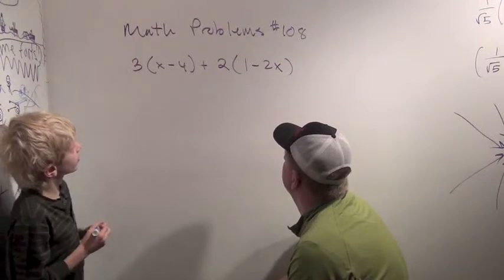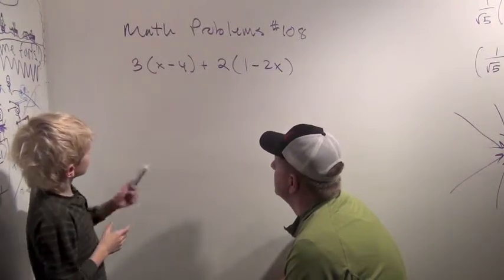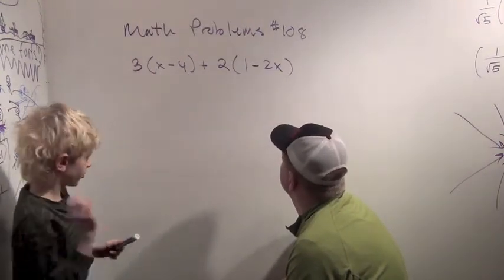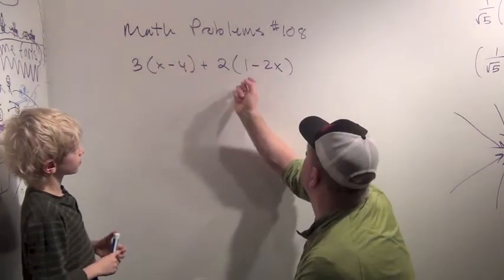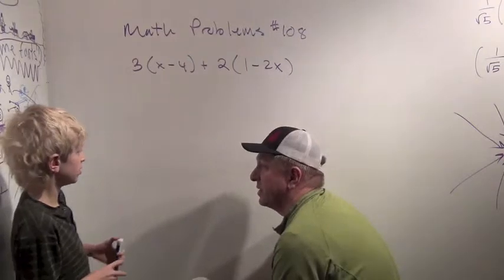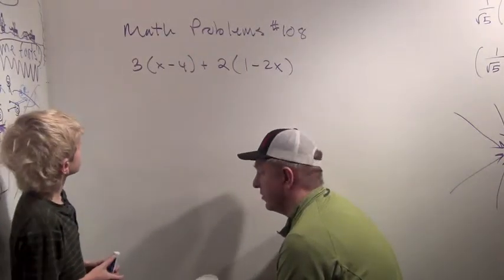Simplify the stuff in the parentheses first. Okay. Anything to be simplified in the parentheses? Well, there's the x's, so we can't really simplify anything. No, it's a good idea to do inside the parentheses first, but in this case they're already all simplified. Okay, so what do you want to try next?